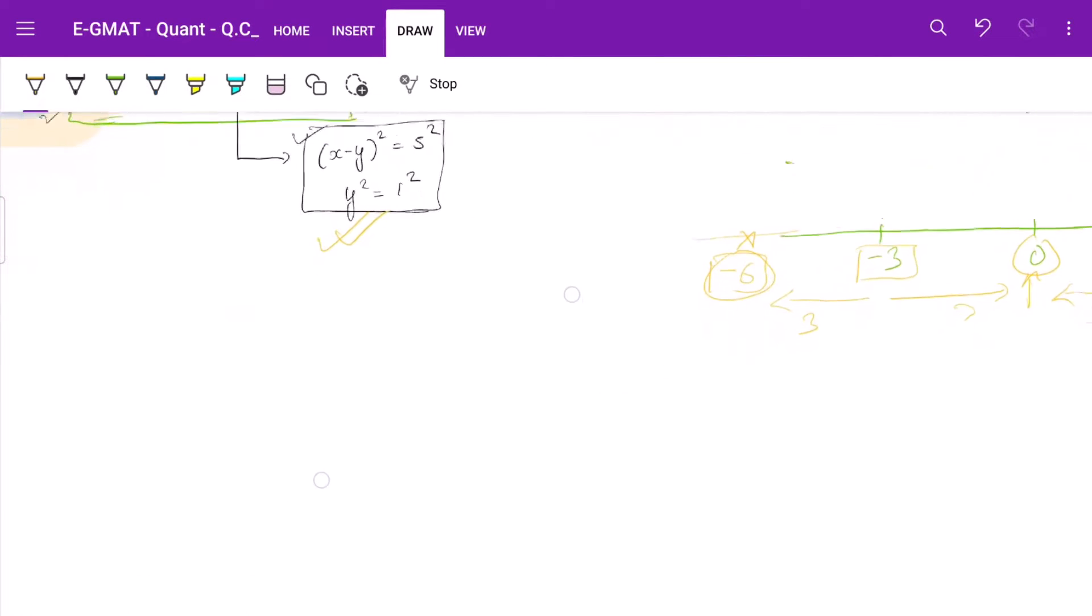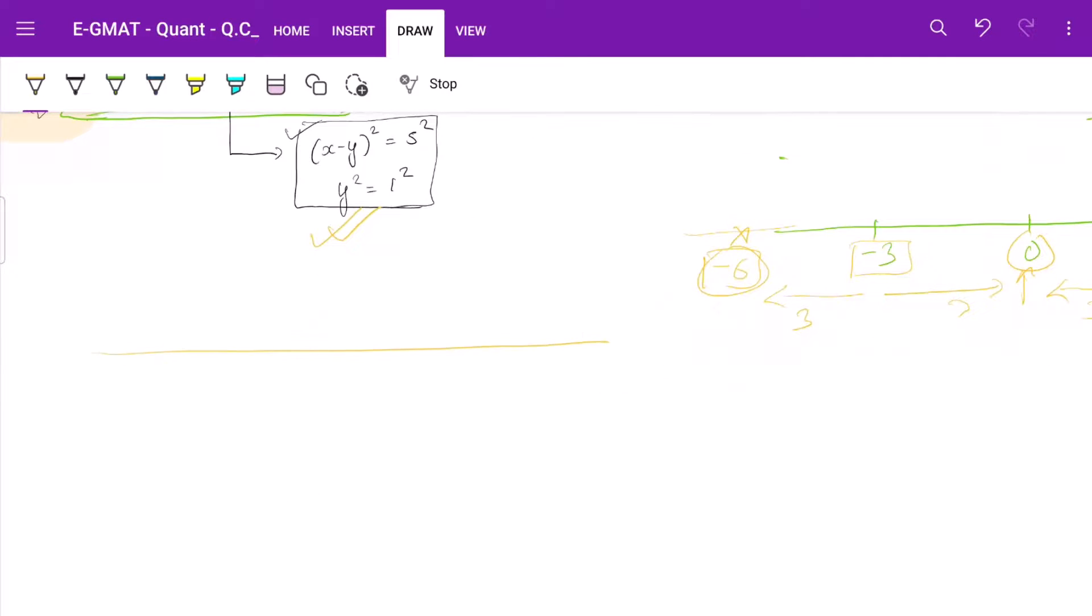Now we have to apply this case. Again, we will draw a number line 0. We will put values of y plus 1 and minus 1. Now what does this mean? The distance between x and y is 5 units.